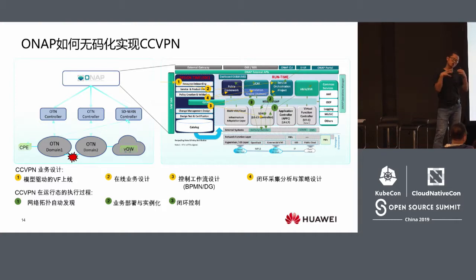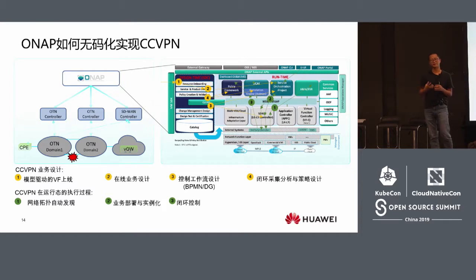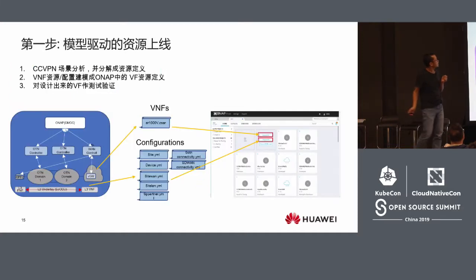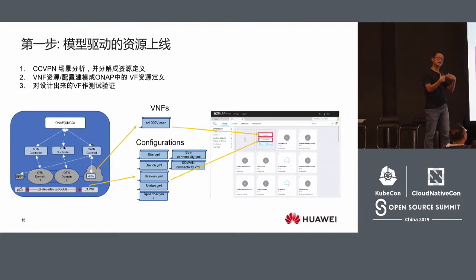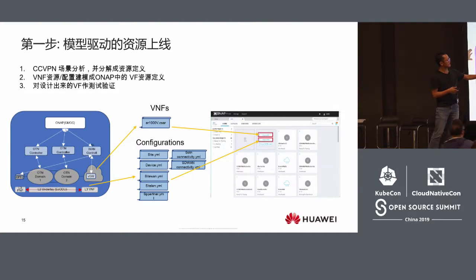Just like China Mobile or China Unicom — now they need a lot of people to do this. But after you have ONAP and this automated platform, you just need a very small team to maintain it. This small team needs to know the network very well — they need to know how to build and establish networks. If it is purely virtual or purely physical, you can write it into a document or set some configuration — all these are resources.